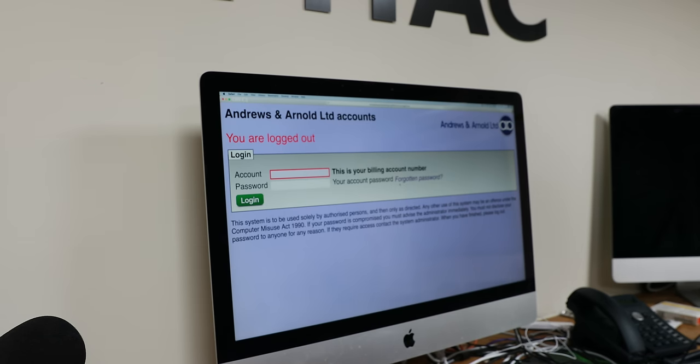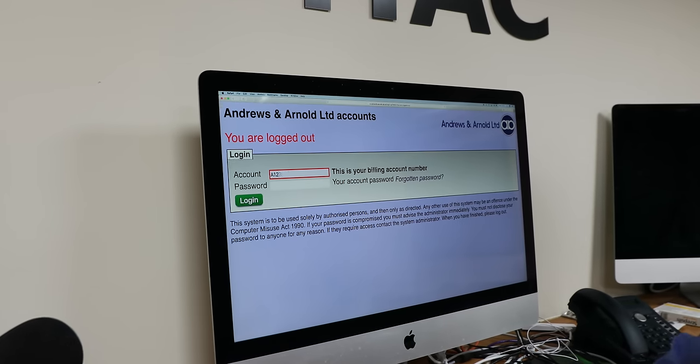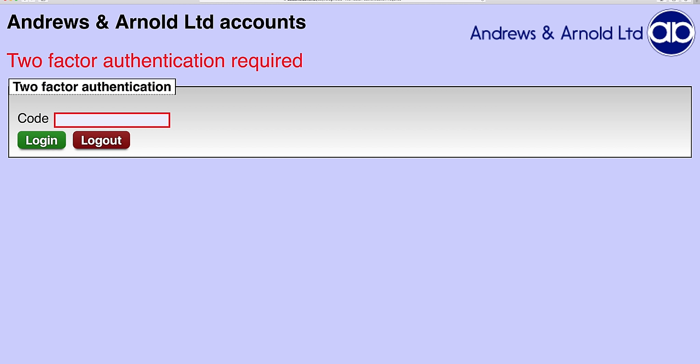Now let's log back into my account, just like before, except this time it says 'two-factor authentication code'. I did select paranoid mode this time, so the only option is to log in with the code or give up and log out. If you haven't selected paranoid mode, you would see an option to send a text, but I shouldn't need to because the app is on my phone. So let's get the code from my phone.